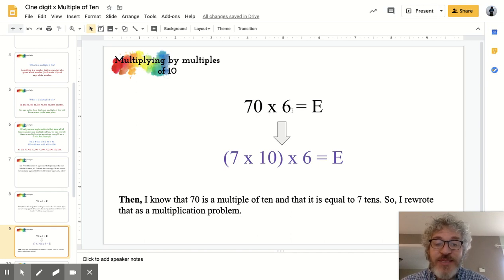70 times 6 equals the number of eggs. So instead of writing 70, I wrote this as 7 times 10 times 6. I know that 70 is a multiple of 10 that is equal to 7 times 10. So I rewrote the multiplication problem like this.